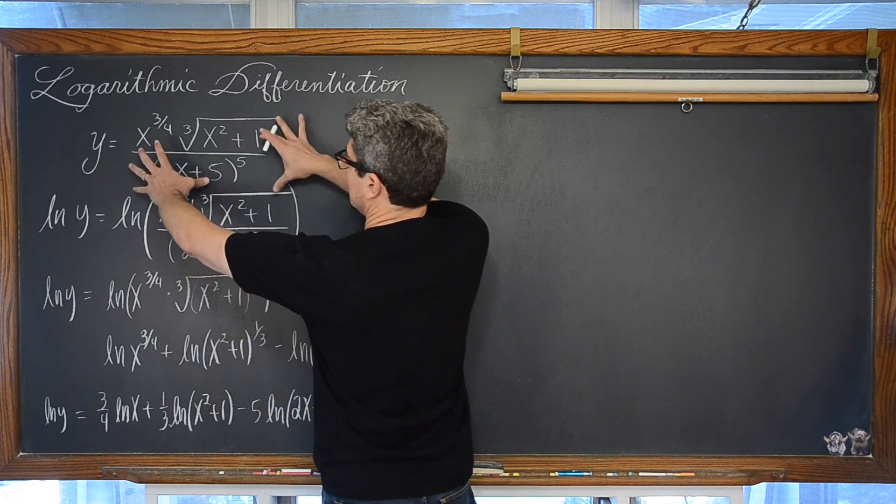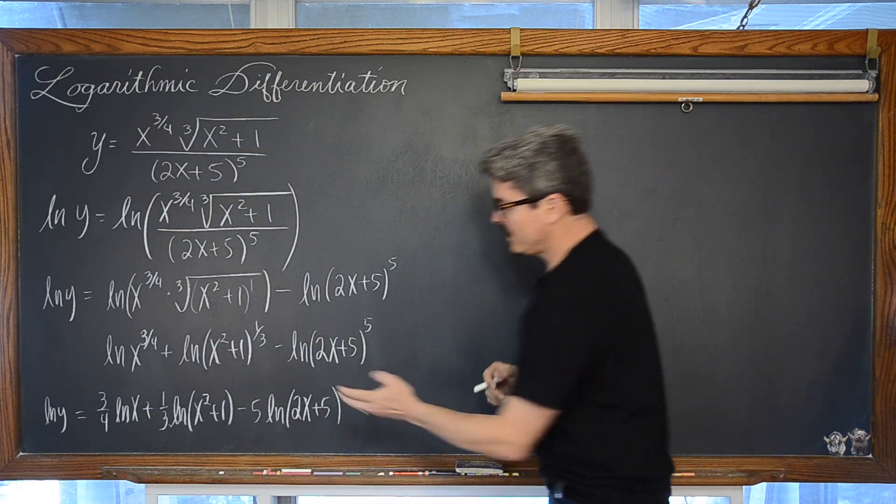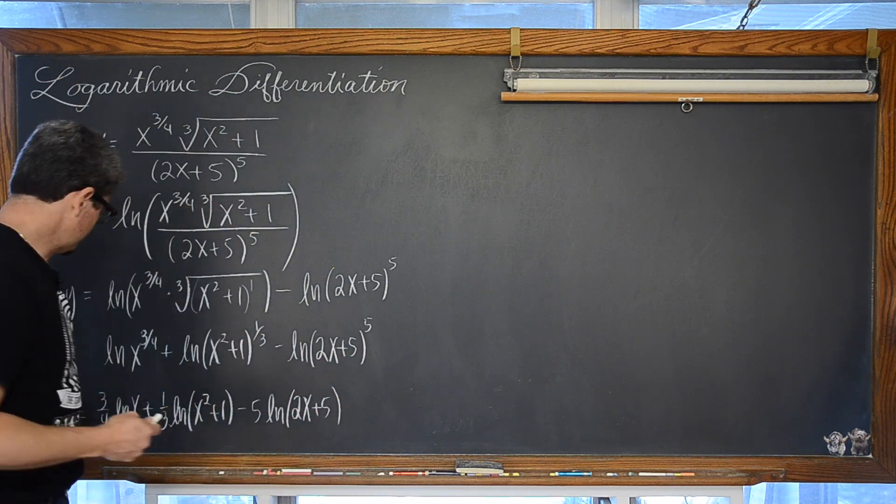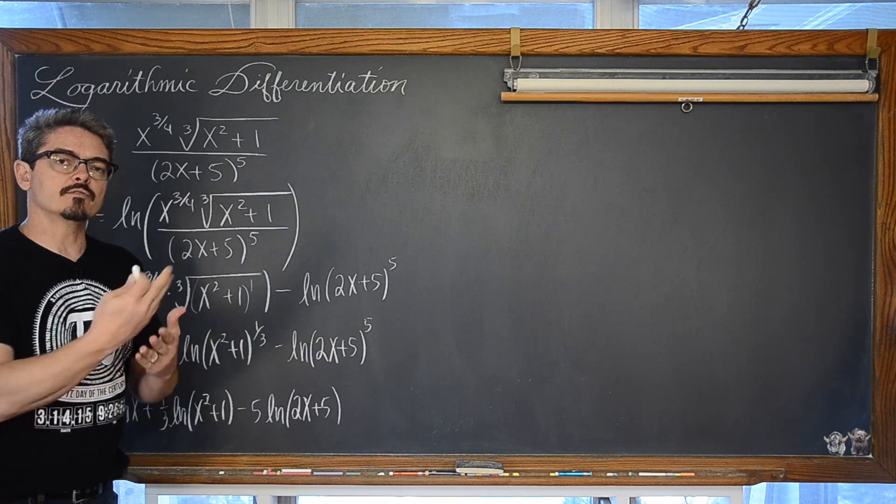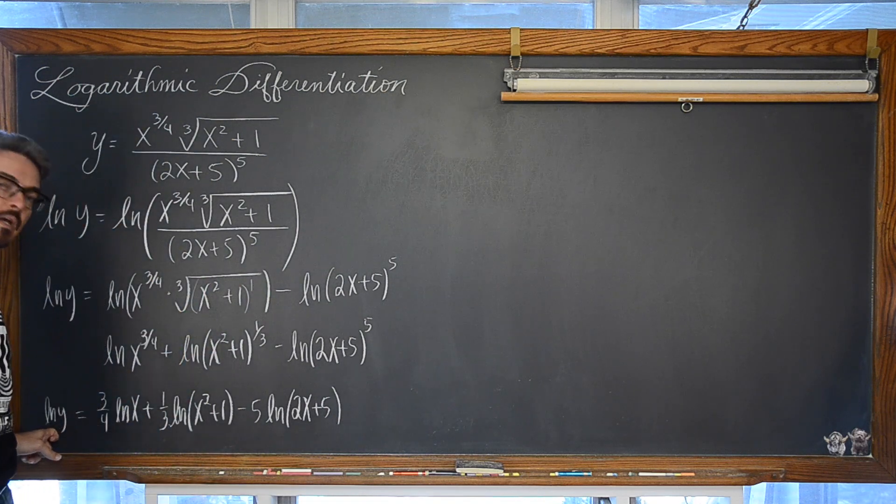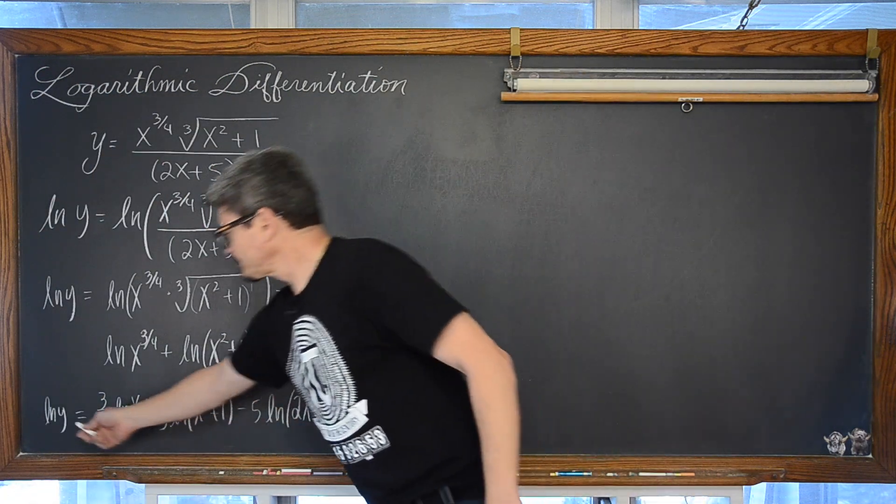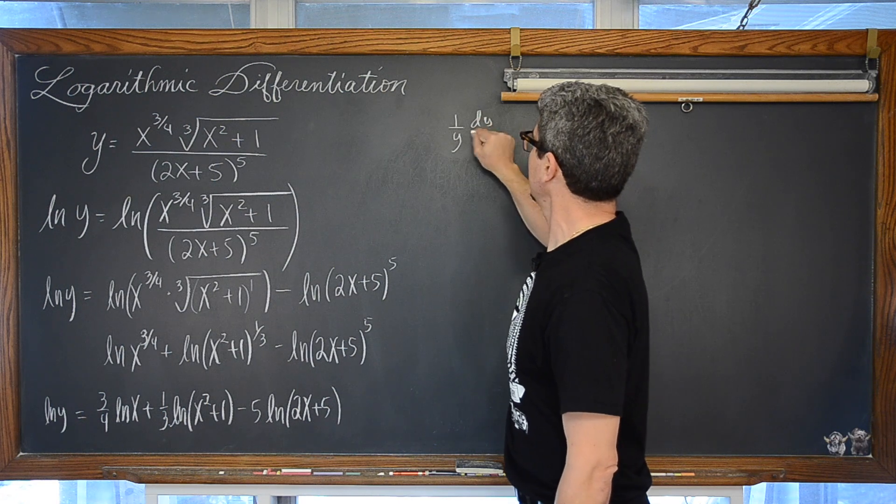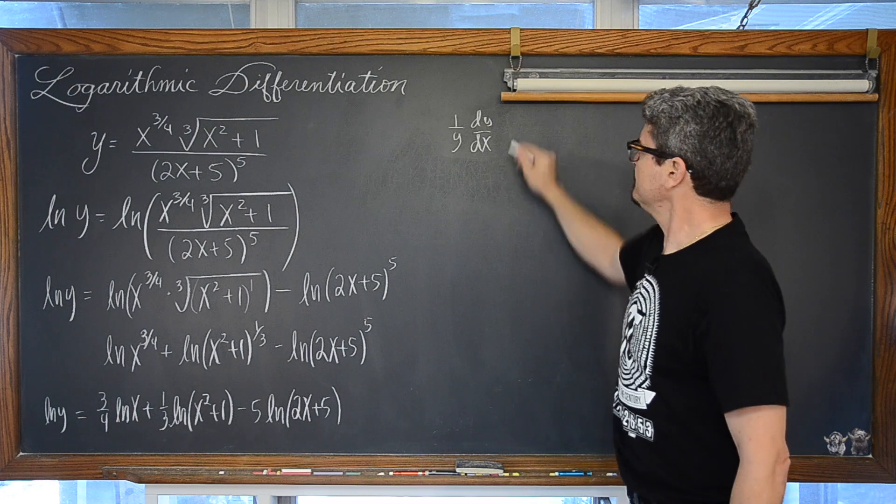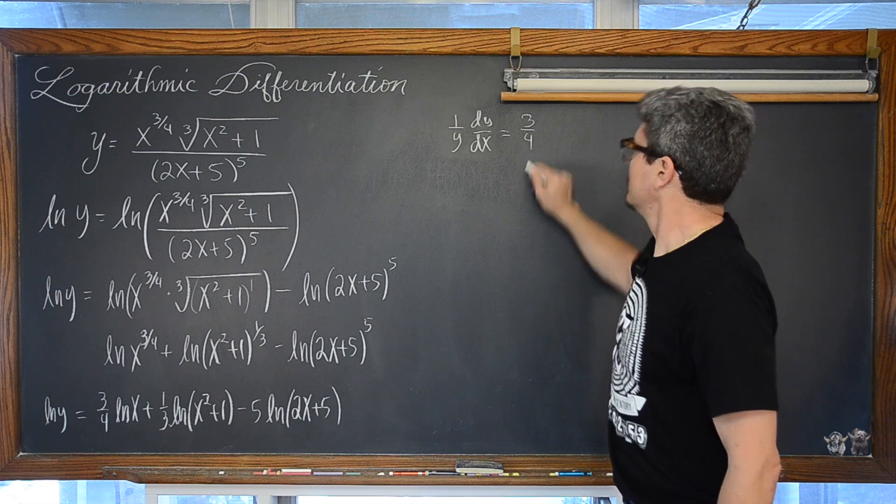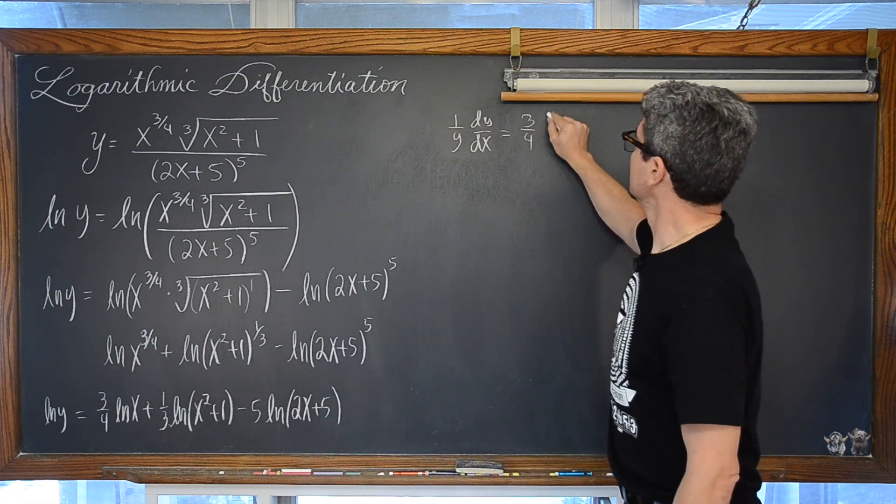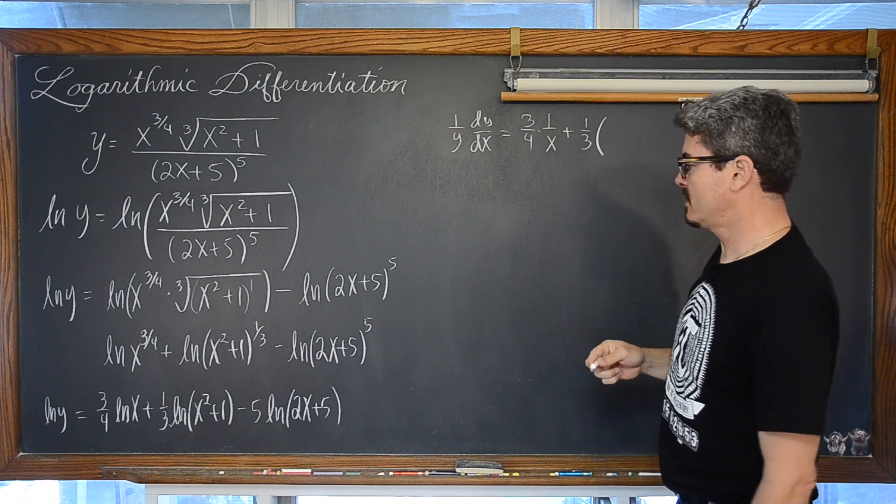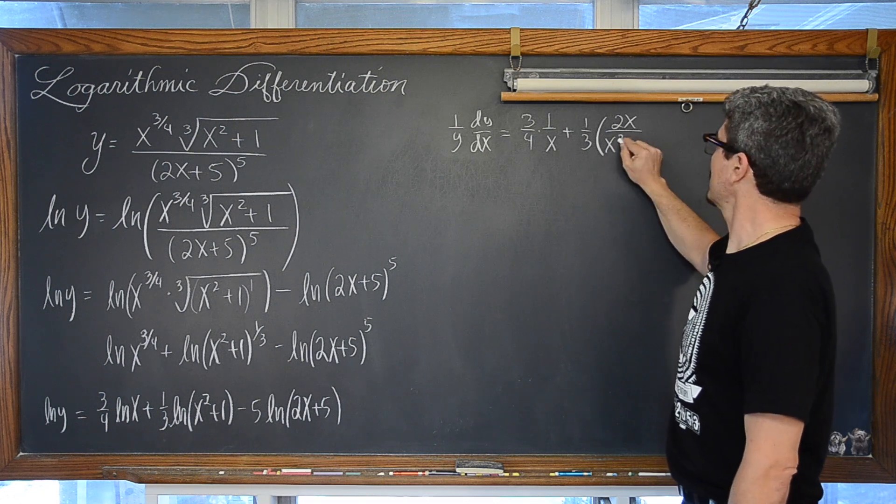And then minus 5 times the natural log of 2x plus 5. Now that we have taken this very complex fraction and written it as three separate terms dealing with just natural logs, we can take the derivative of each of these individual terms, remembering of course that the derivative of natural log is, or the derivative of the natural log of u is u prime over u. So we are going to have for here the derivative, and we are taking that derivative with respect to x. So we have the derivative of the natural log of y is going to be equal to 1 over y and then times dy/dx, which you may be writing as y prime, is equal to 3/4, the derivative of natural log of x with respect to x is 1 over x. Now we have got 1/3 times the derivative of x squared plus 1 is equal to 2x over our original x squared plus 1.